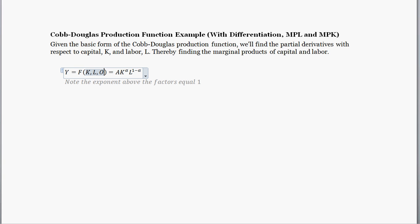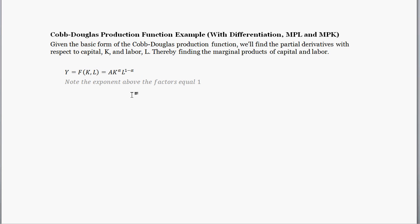Other versions might add additional things like oil or energy. But in the simplest form, output is a function of capital and labor. You start off with a scalar in front representing technology — very often this just goes away, meaning technology is constant and equal to 1. Then K is raised to alpha and labor is raised to 1 minus alpha. The rule with typical Cobb-Douglas functions is that the exponents sum to 1, giving you a constant returns-to-scale production function.